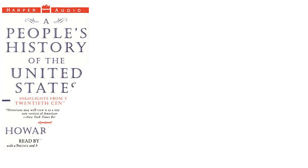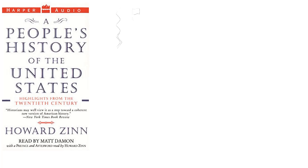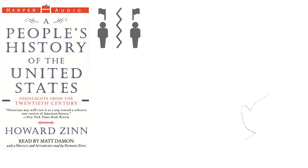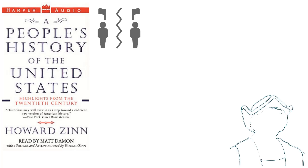One of the most well-known American history books written in the last few decades is A People's History of the United States by Howard Zinn, published in 1980. Zinn intends on writing about American history from the point of view of people who have been mistreated, weakened, or left out, rather than from the point of view of heroes and powerful people.